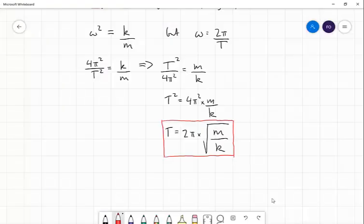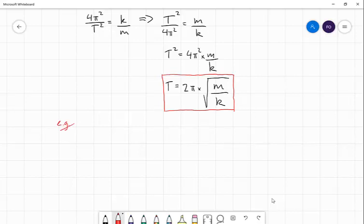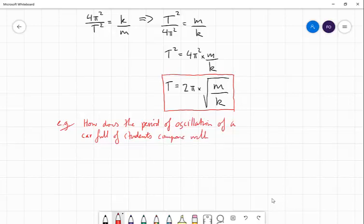So that kind of shows us the relationship there. So what we'll do is just have a look and see if we can use this to explain a couple of situations. So let's look at the first example. How does the period of oscillation of a car full of students compare with that of an empty car when it hits a bump?